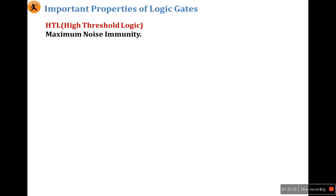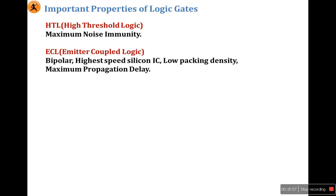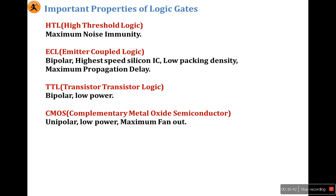Key properties: HTL (High Threshold Logic) has maximum noise immunity. ECL (Emitter-Coupled Logic) is a bipolar logic family and is the fastest logic family, but has maximum propagation delay and low packing density. TTL (Transistor-Transistor Logic) is the widely used bipolar logic gate with low power consumption compared to ECL.